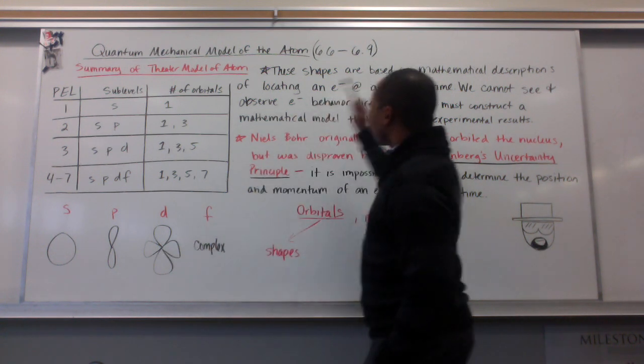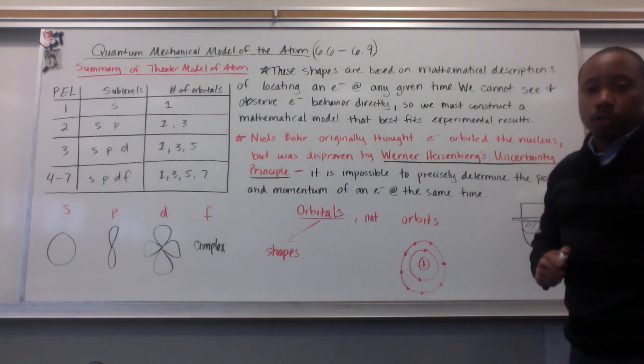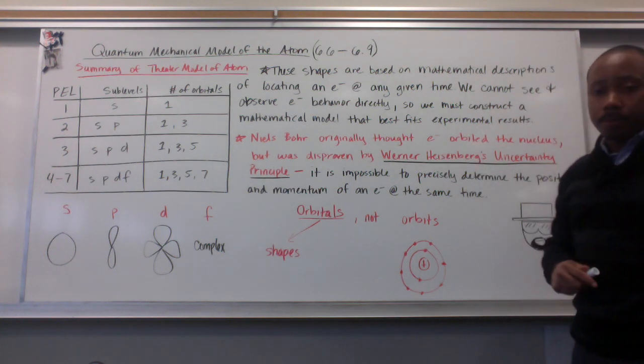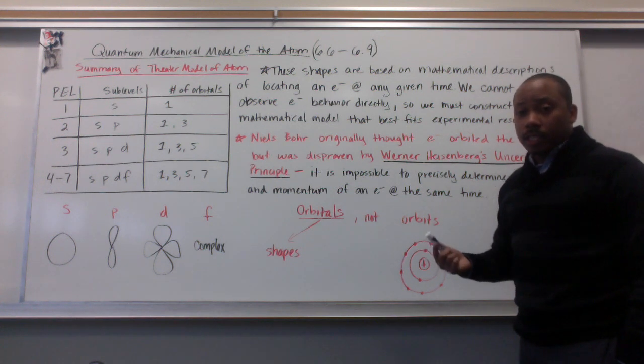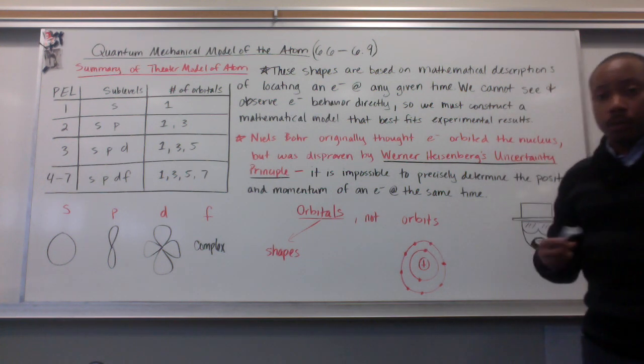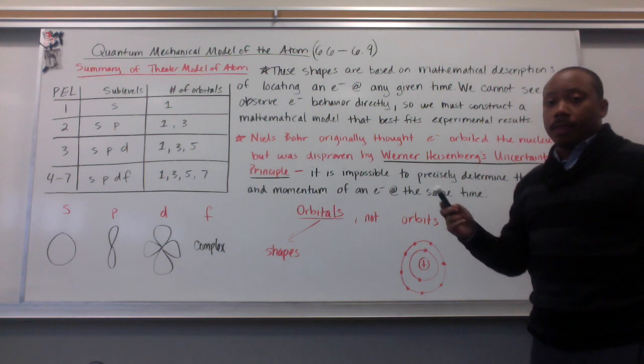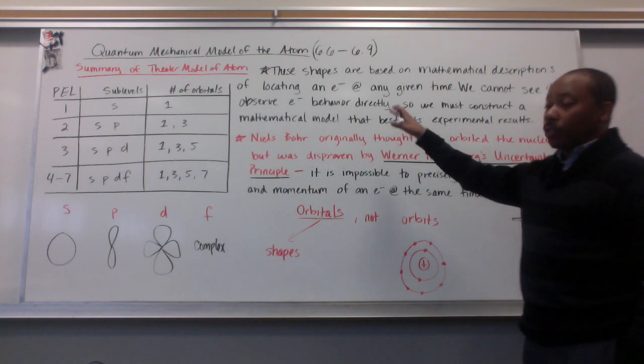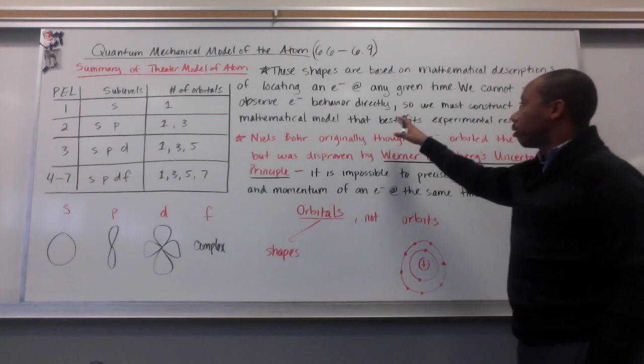These shapes are based on the mathematical descriptions of locating an electron at any given time. We have to do this because we cannot observe with our eyes or with many tools the direct behavior of electrons.